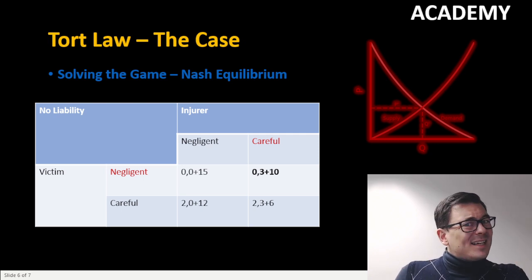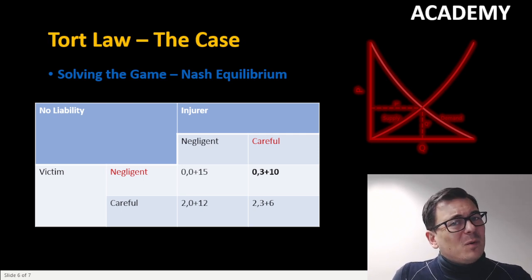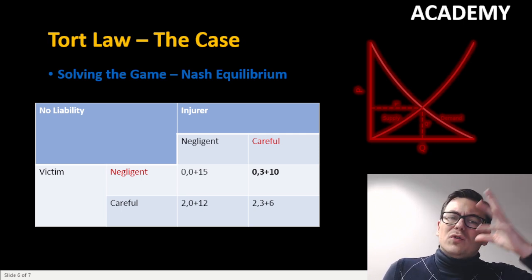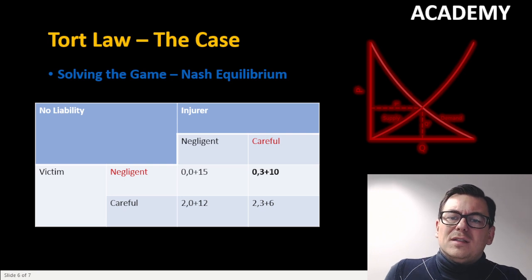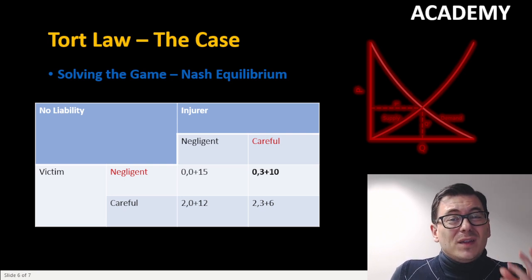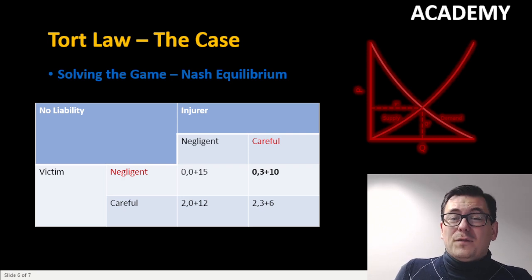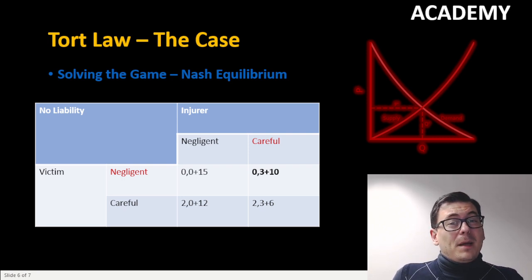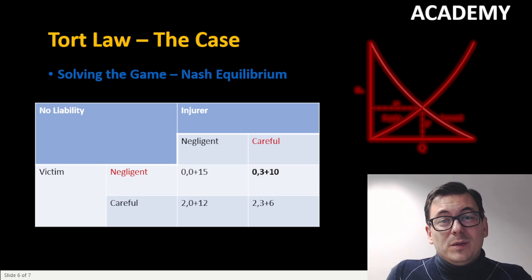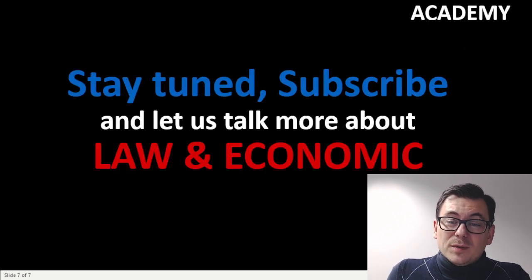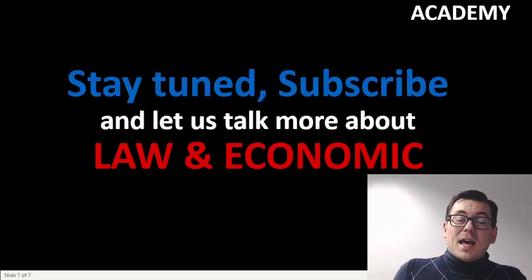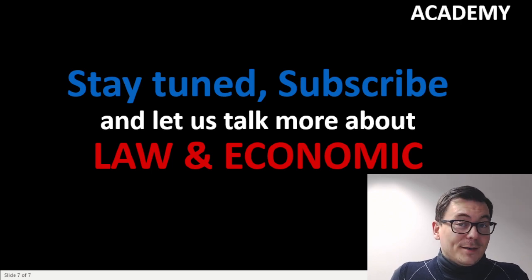This is not the best case scenario from a social welfare perspective, because we could achieve a total cost of 11. So this rule has not produced a Kaldor-Hicks efficient result. But maybe another rule will do that — let's look into it. Stay tuned, subscribe to this channel, and let's talk much more about law and economics.